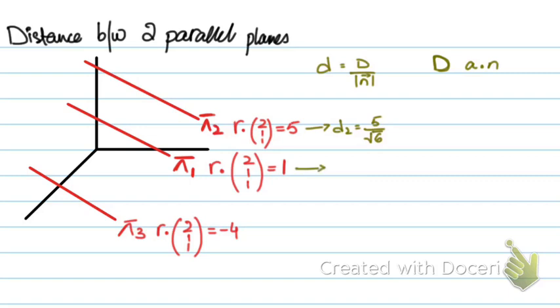For this one, for the first plane, this will be 1 over root 6. And for the last plane, this will be 4 over root 6. It's minus 4, but the distance is always positive, so we put it in a modulus. So, minus 4, and this becomes 4 over root 6.